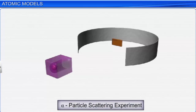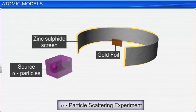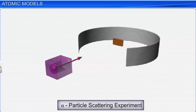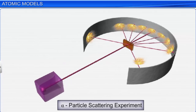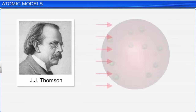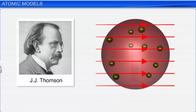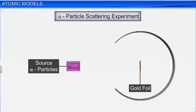In the alpha particle scattering experiment, a stream of high energy alpha particles from a radioactive source was bombarded on a very thin gold foil. The thin gold foil had a circular fluorescent zinc sulfide screen around it. Whenever alpha particles struck the zinc sulfide screen, a tiny flash of light was produced at that point. If Thomson's model were correct, all the alpha particles should pass through the gold foil almost undeflected, because the entire mass and positive charge is uniformly spread throughout the atom. However, the observations were quite contrary to these expectations.